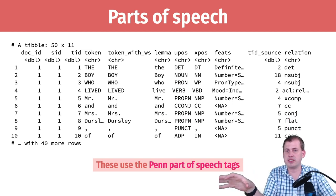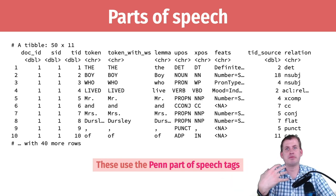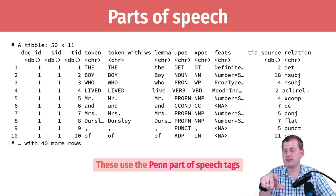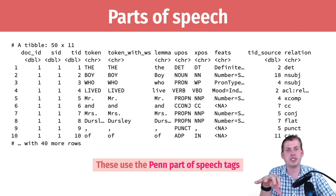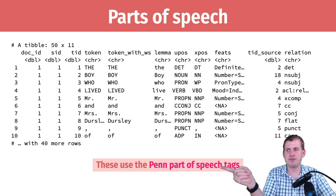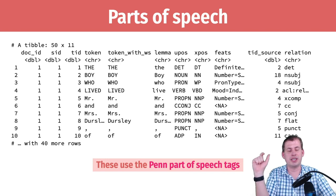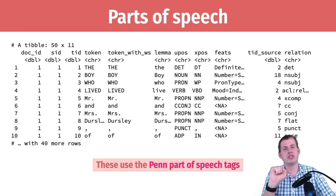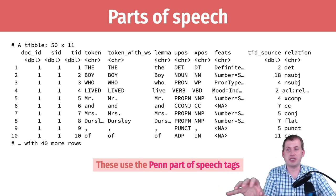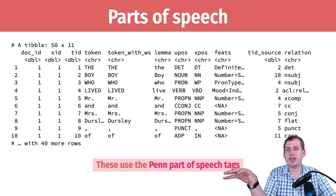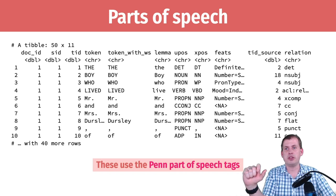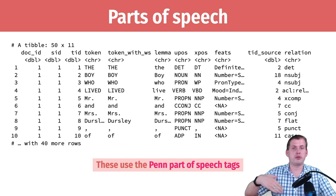There's a POS processor you can use directly in R without installing anything extra — I have the code on the example page for today. It does take a long time: processing Little Women took about three minutes, and Harry Potter took about 20 minutes. So you don't want to put the parts-of-speech tagging inside an R Markdown file, because every time you knit you'd have to wait 20 minutes. Instead, put that in a separate R script, run it once, save the tagged data, and then load it in your R Markdown file so you don't have to redo the tagging.